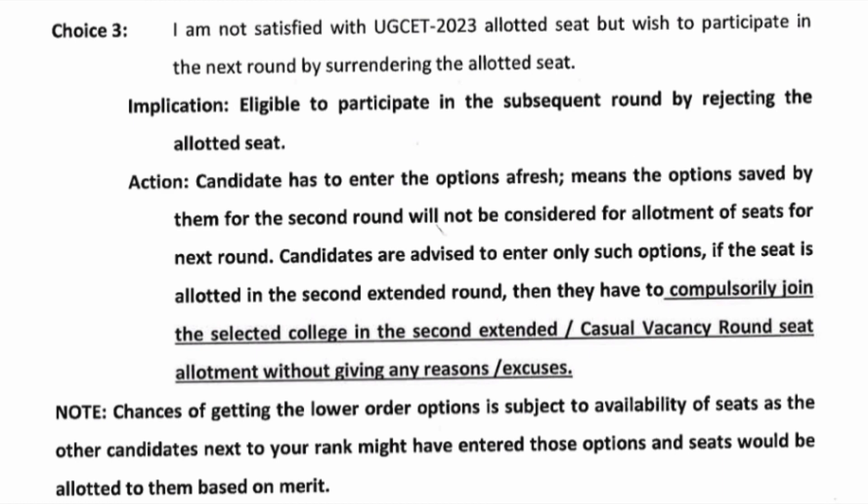Next is Choice 3. Choice 3 students say: I am not satisfied with the KCET seat allotted and I want to participate in the next round of counseling — the KCET second extended round — by surrendering the allotted seat. That means you are rejecting the seat you have got. All Choice 3 students can add a fresh option entry, and all option entries saved by them in the earlier round will not be considered. They will have to do a fresh option entry and can set college priorities from 1 to 100, including new colleges and old colleges.